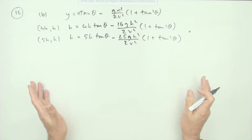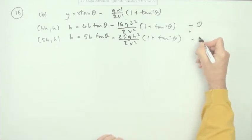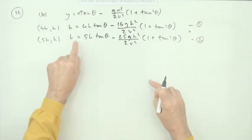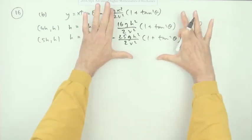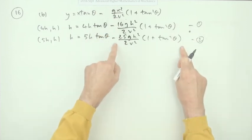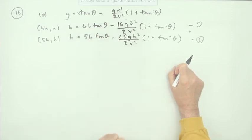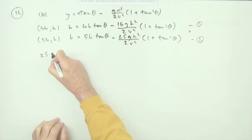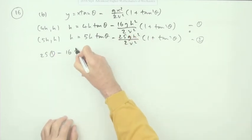There's a whole load of algebraic manipulation in the marking scheme to get to the final answer. I don't know why they do that because there's a fairly quick and simple way. These terms match exactly term for term. If I do 25 of equation one and take away 16 of equation two, that bundle will disappear.